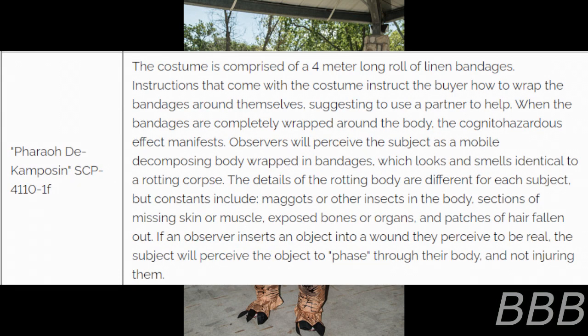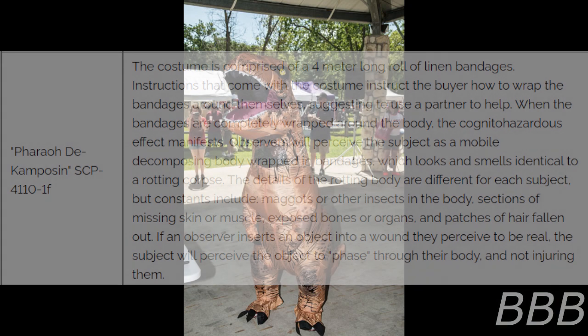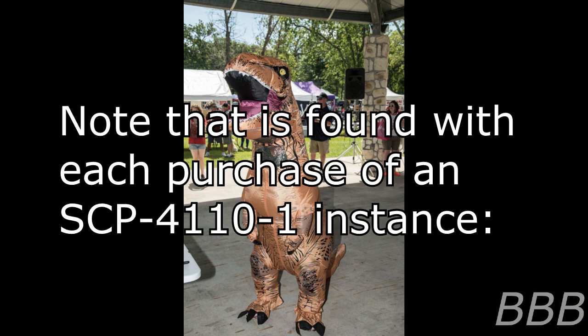Thorough Decomposing — SCP-4110-1-F: The costume is comprised of a four-meter-long roll of linen bandages. Instructions that come with the costume instruct the buyer how to wrap the bandages around themselves, suggesting the use of a partner to help. When the bandages are completely wrapped around the body, the cognitohazardous effect manifests: observers will perceive the subject as a morbidly decomposing body wrapped in bandages, which looks and smells identical to a rotting corpse. Details vary per subject but constants include maggots or insects, sections of missing skin or muscle, exposed bones or organs, and patches of hair fallen out. If an observer inserts an object into a perceived wound, the subject will perceive the object to pass through their body without injury.